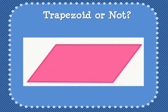What about this one? Is it a trapezoid? Hopefully you said yes, it is a trapezoid. This is also known as a parallelogram, but we're going to also call it a trapezoid because it has one pair of parallel sides right here and also has one pair of parallel sides right here. Remember, to be a trapezoid using our definition, it just has to have at least one pair of parallel sides.